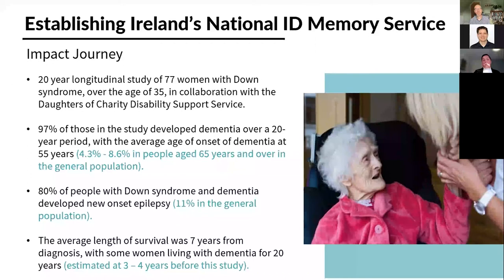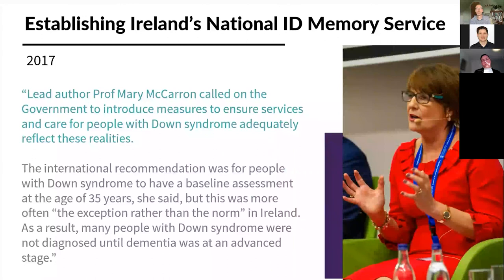For those women who had both Down syndrome and dementia, 80% developed a new-onset epilepsy — again, very different from the general population. The study also showed that women were living with dementia for up to 20 years. This was concurrent with research from national and international partners saying the same thing — there may be an implication of chromosome 21. The lead author said, we have got to do something about it. The group most at risk has very little services available. International research says people with Down syndrome should be assessed at age 35 with a baseline assessment — but this was the exception rather than the norm in the Irish context.